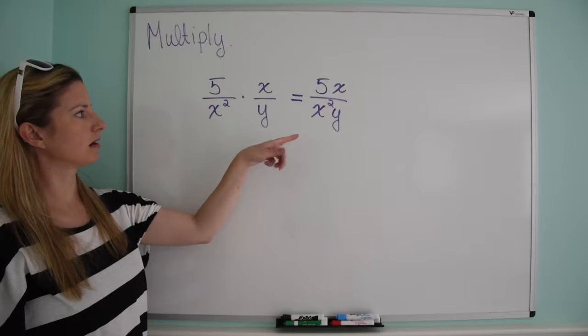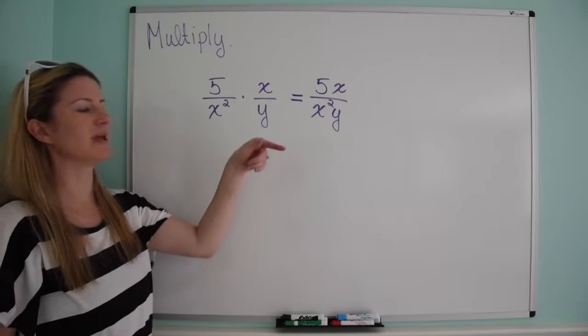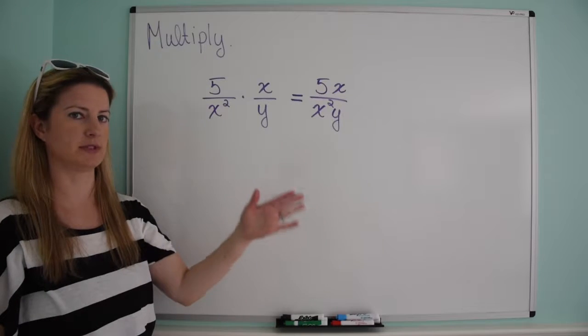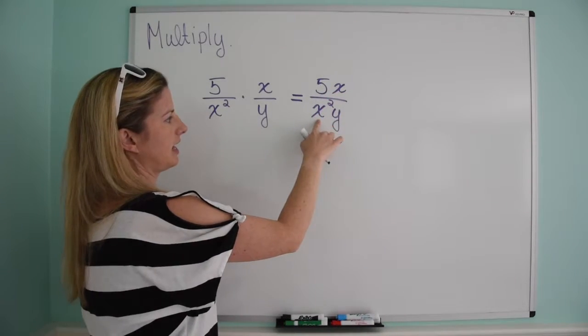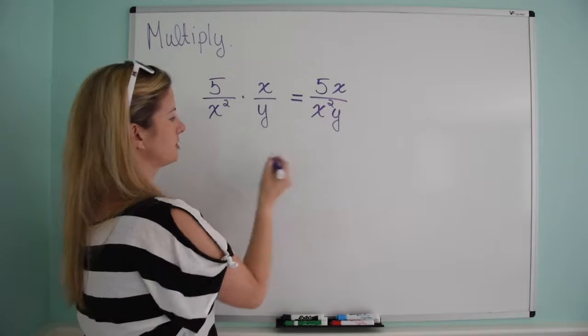Now, we are technically done here, but we haven't simplified it. So that's a problem - we can reduce this. We've got an x up here and an x squared down here. So let me show you something.